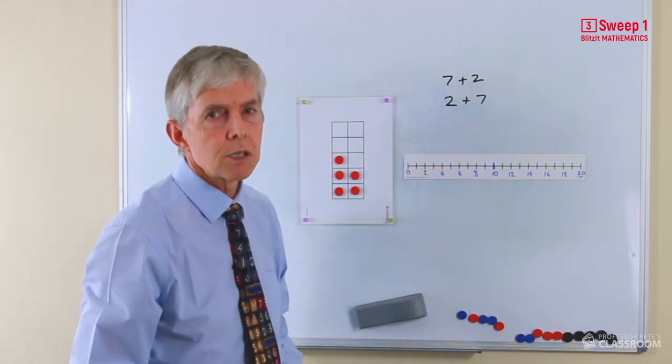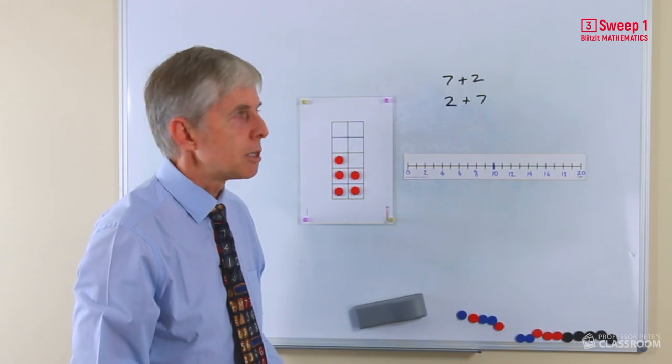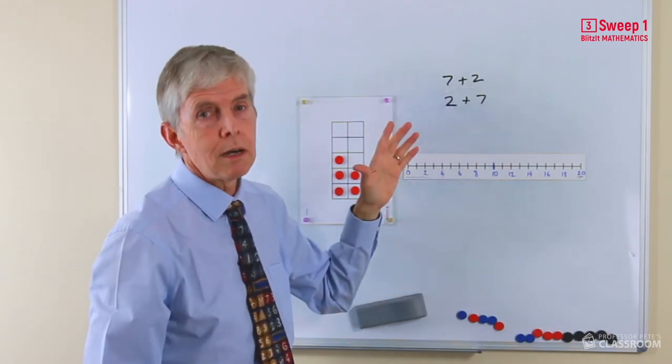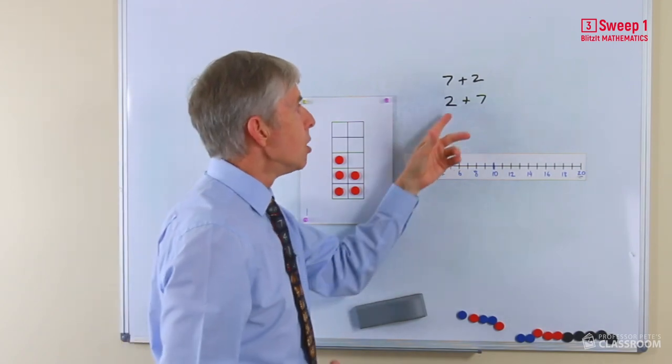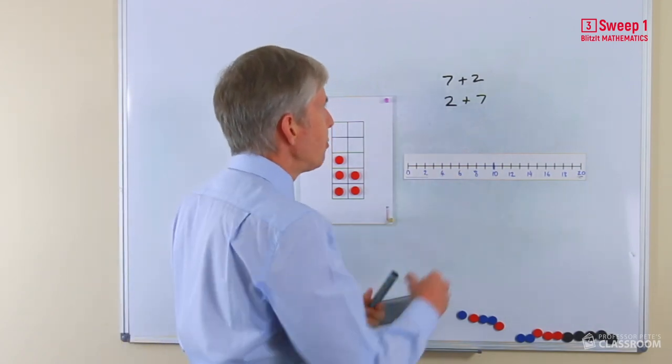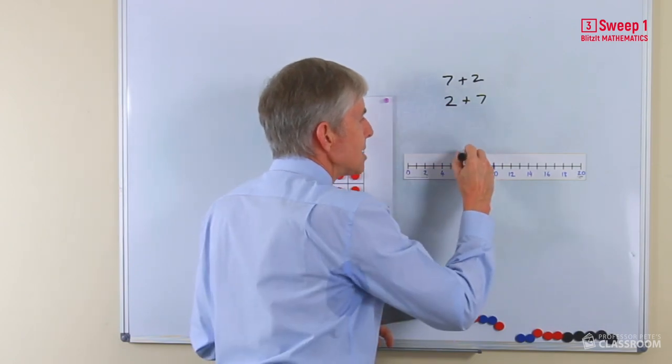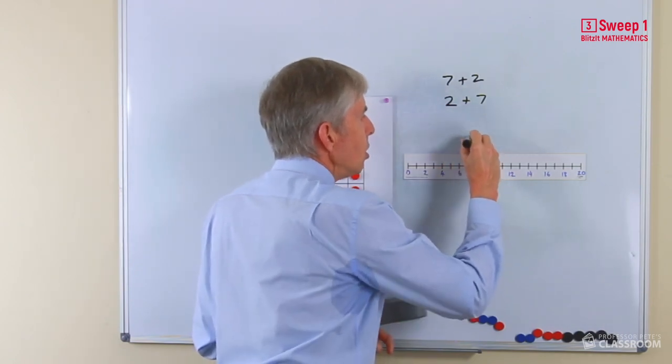So I would probably use materials for that, make sure the students understand that. But basically if they can see a plus two or a plus one for this strategy then we can use the count on strategy. So if it was two plus seven, let's turn that around. Start with seven. Here's seven, we're counting on two, what number will that get to? And we go seven, eight, nine and so on.